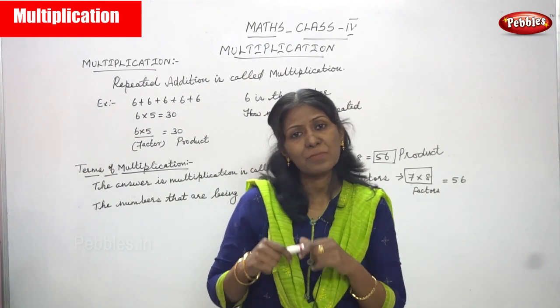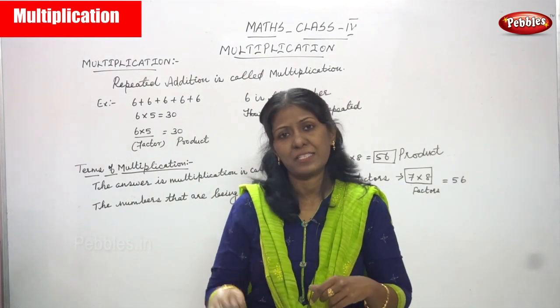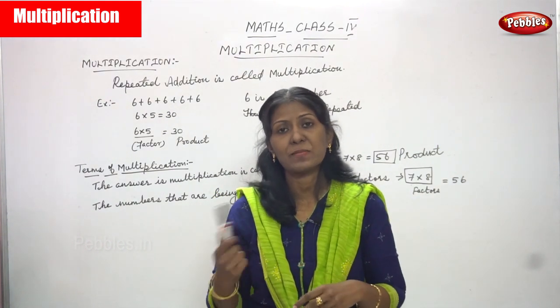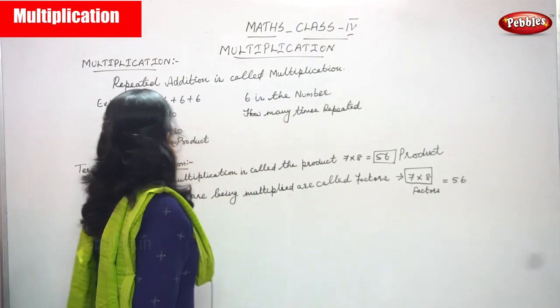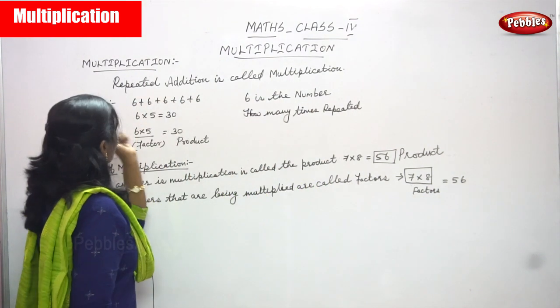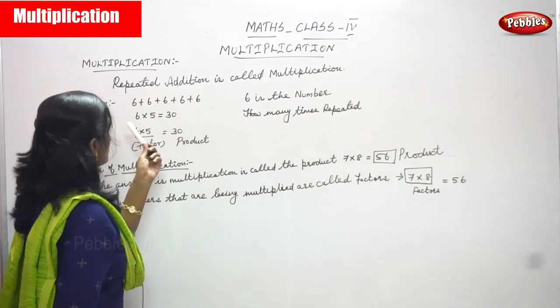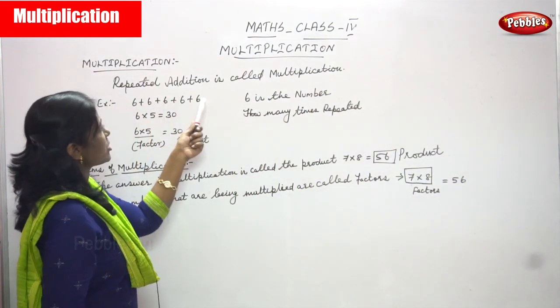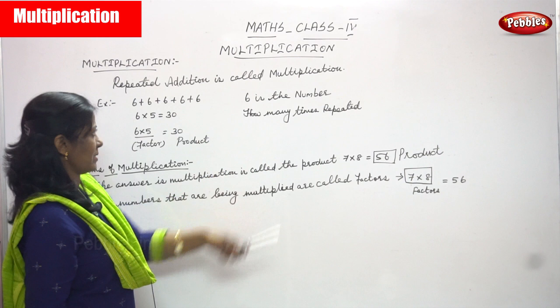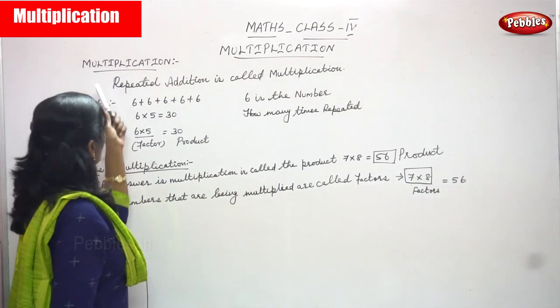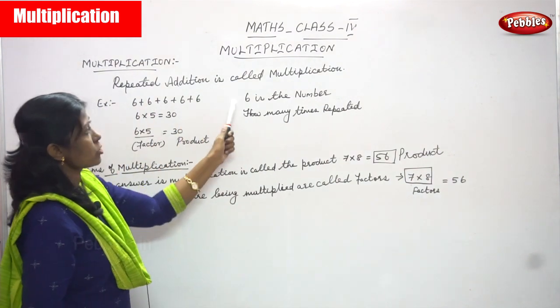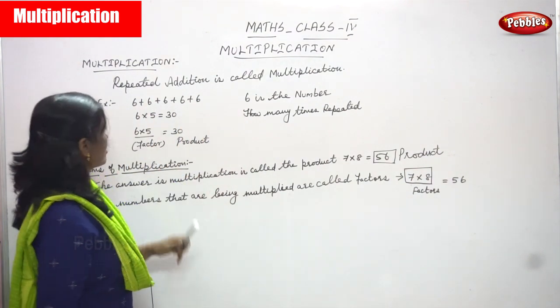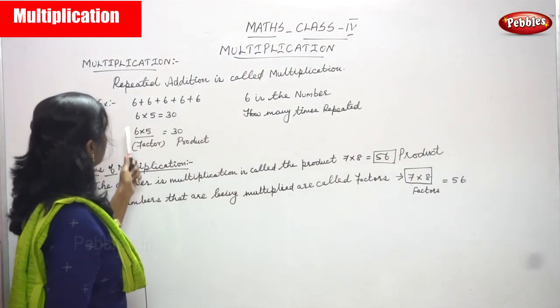Multiplication means repeated addition is called as multiplication. Repeated addition is called multiplication. So, multiplication means repeated addition is called multiplication. For an example: